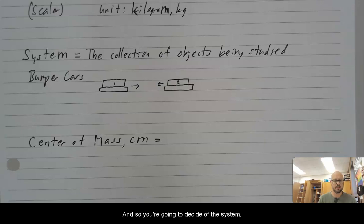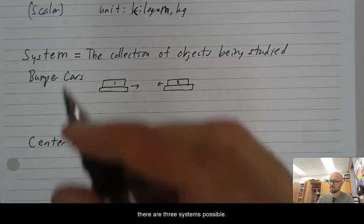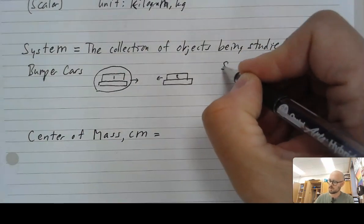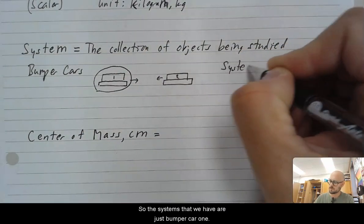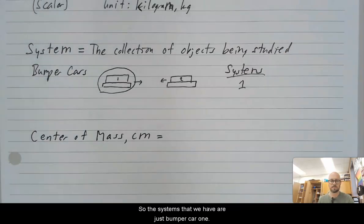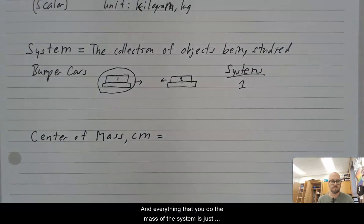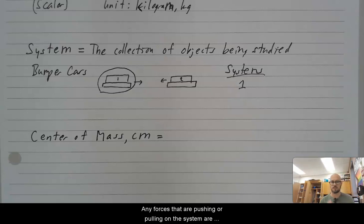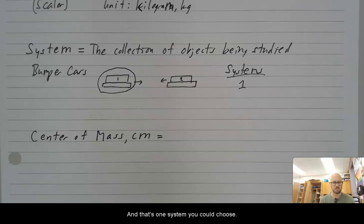And so those bumper cars are headed toward one another to collide, and so you're going to decide on the system. Now for any set of two objects, there are three systems possible. So you could analyze only bumper car one. So the systems that we have are just bumper car one. And everything that you do, the mass of the system is just the mass of bumper car one. Any forces that are pushing or pulling on the system are all the forces that are only acting on bumper car one. And that's one system you could choose.